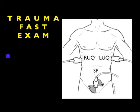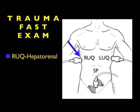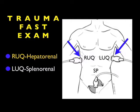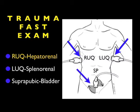In this module, we're going to focus entirely on the trauma fast exam. Specifically, we're going to look further into the right upper quadrant view, also known as the hepatorenal view. We're going to cover the two other views of the trauma fast exam in upcoming modules: the left upper quadrant view, also known as the splenorenal or perisplenic view, and the suprapubic view, also known as the bladder view.